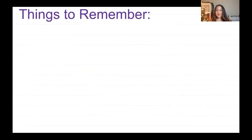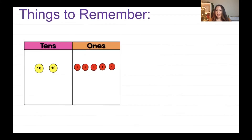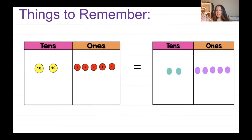Remember, when I have a tens and ones chart or a hundreds, tens, and ones chart, I can use place value chips, and that's the same as representing the number with just dots. That's what I'm going to be working with today. Let's go ahead and get started.